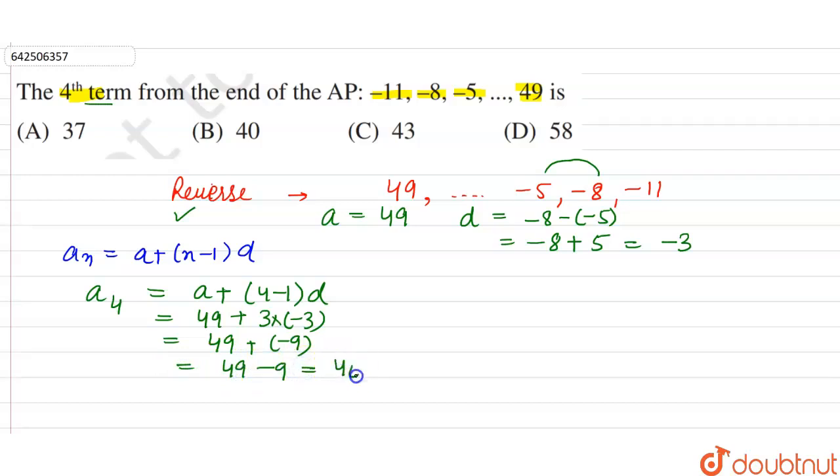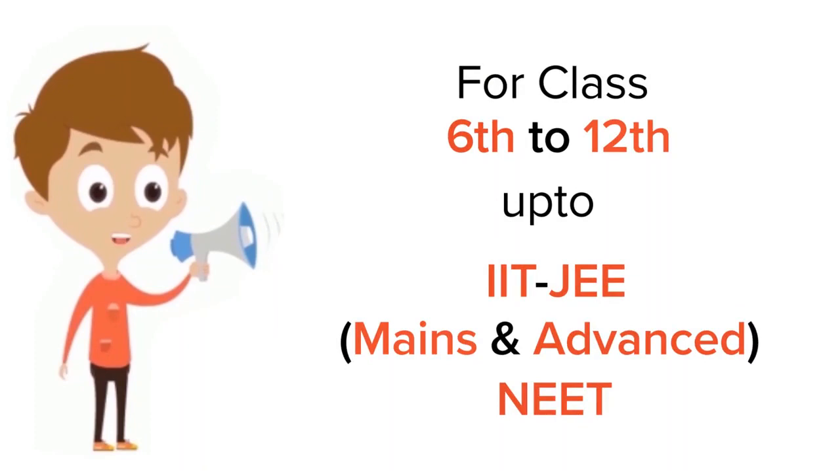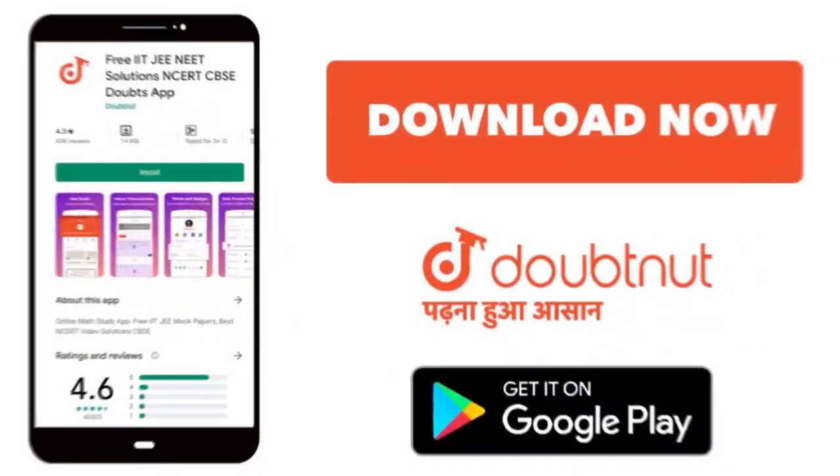So the fourth term is 40, so option B will be the correct option. For class 6 to 12, IIT-JEE and NEET level, trusted by more than 5 crore students, download Doubtnet today.